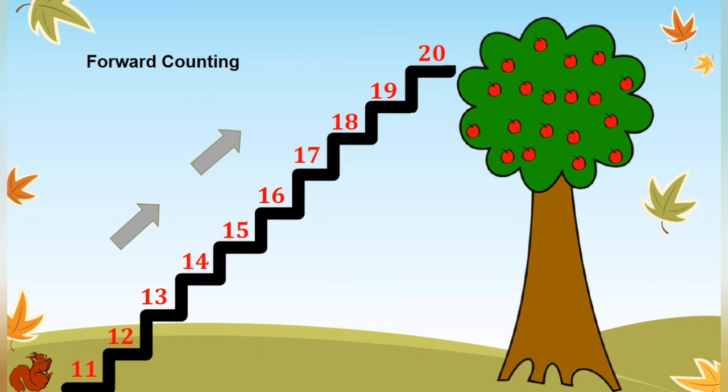Now let us follow squirrel from number 11 to 20. Here, 11 is 1 more than 10. 12 is 1 more than 11. 13 is 1 more than 12. And so on. So what will come after 14? 15. Then 16, 17, 18, 19, and 20.